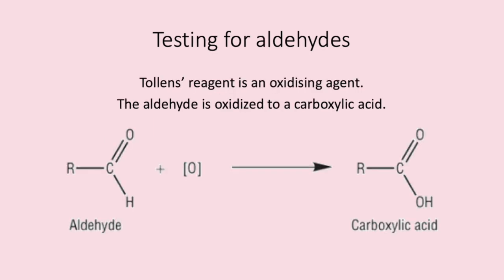This is because the Tollens reagent acts as an oxidising agent. The aldehyde is oxidised to a carboxylic acid, as shown in the mechanism below. Simultaneously, silver ions in the Tollens solution are reduced to a silver precipitate.